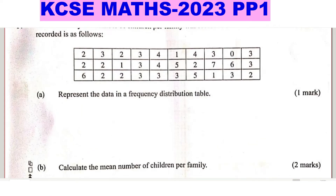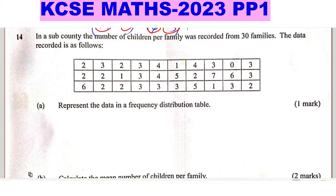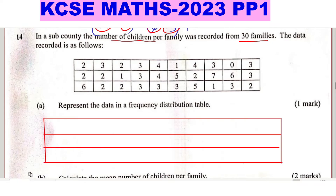The data values represent the number of children per family, with a total of 30 families. The smallest value is zero and the largest is seven. I'll prepare the table with the number of children represented by x, and the number of families represented by f, which is the frequency.